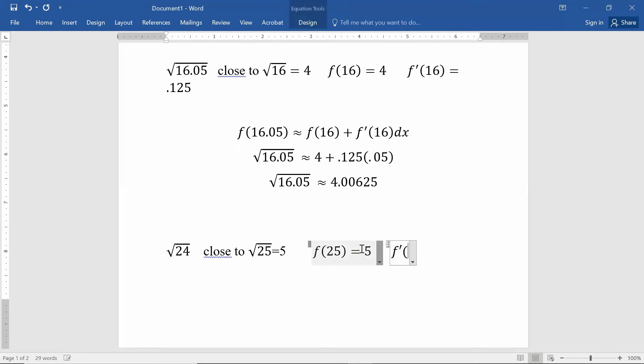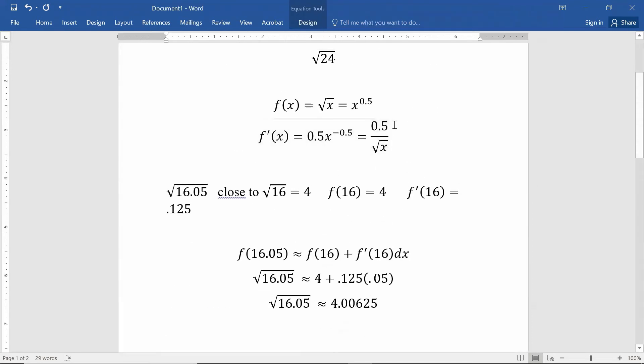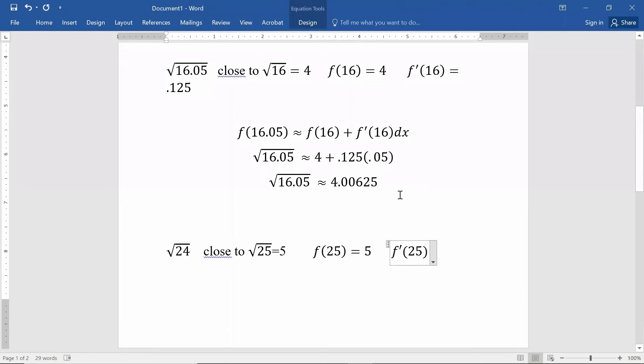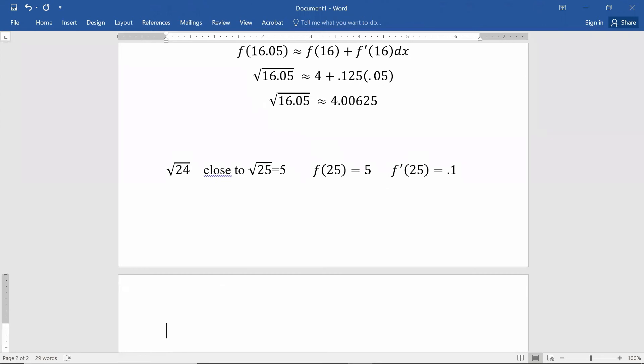Moreover, if you take the derivative function and plug in 25, you scroll back up here. 0.5 divided by square root of 25 would give you 0.1. So calculate that. You should get a 0.1.